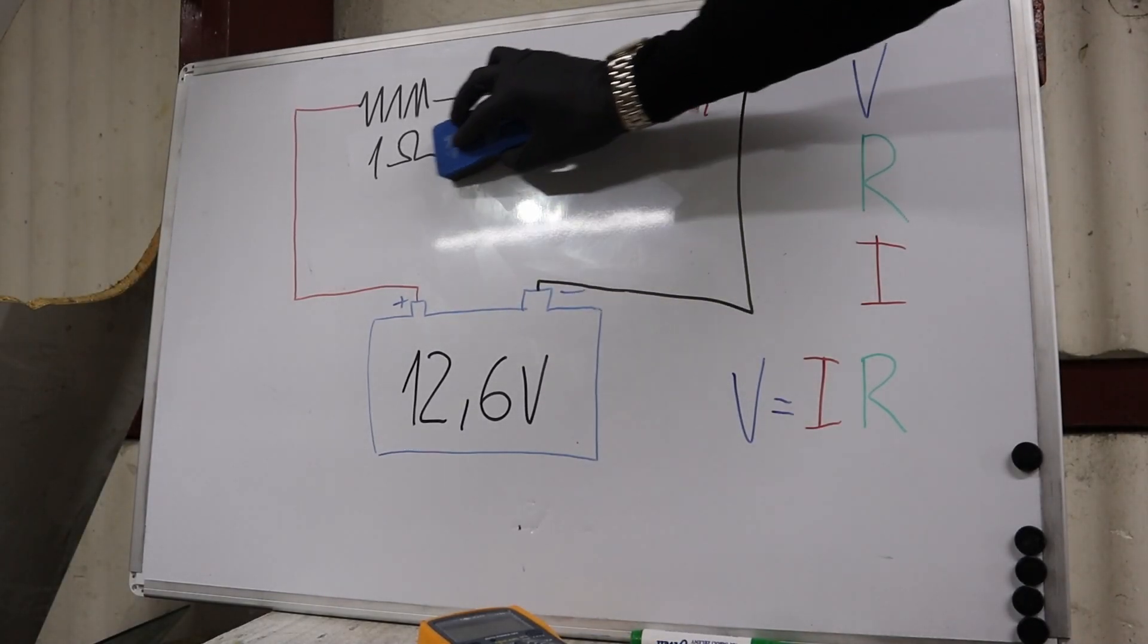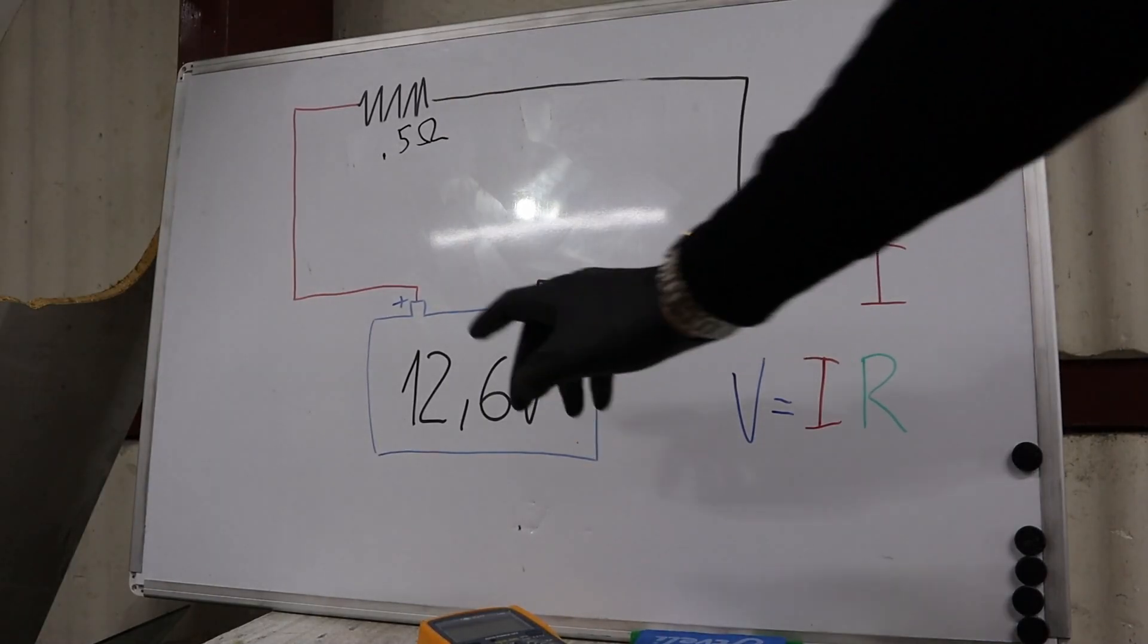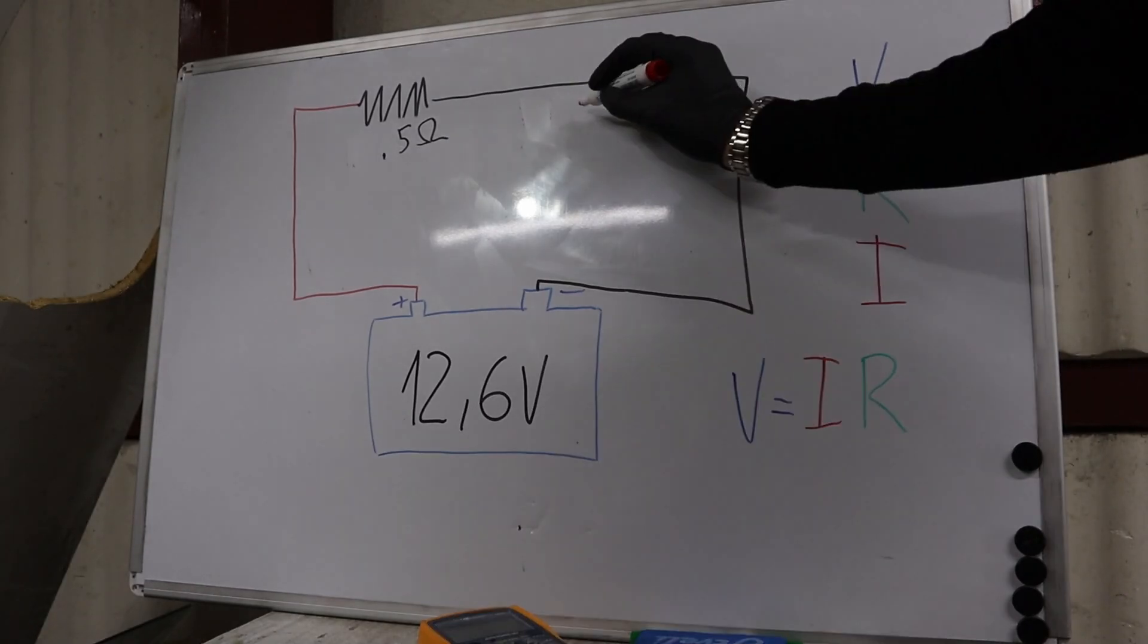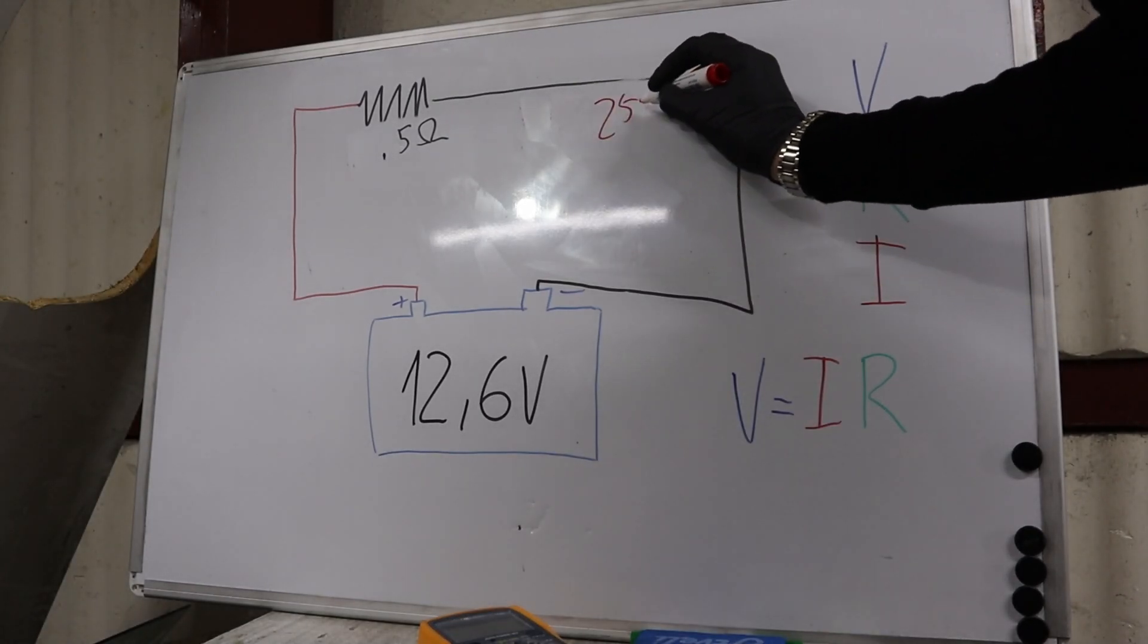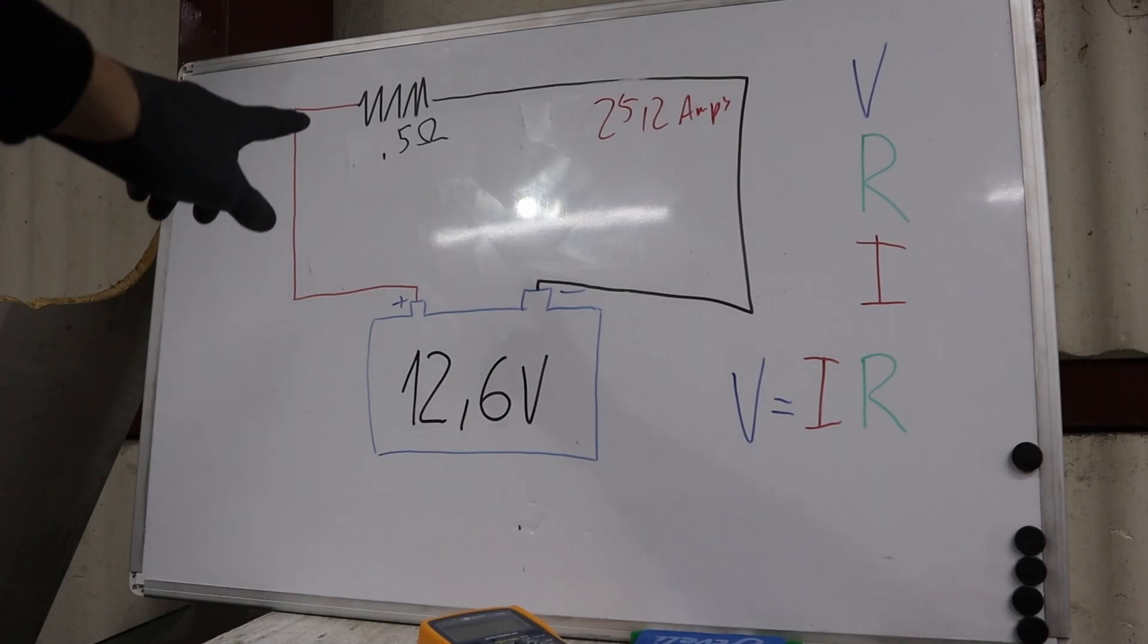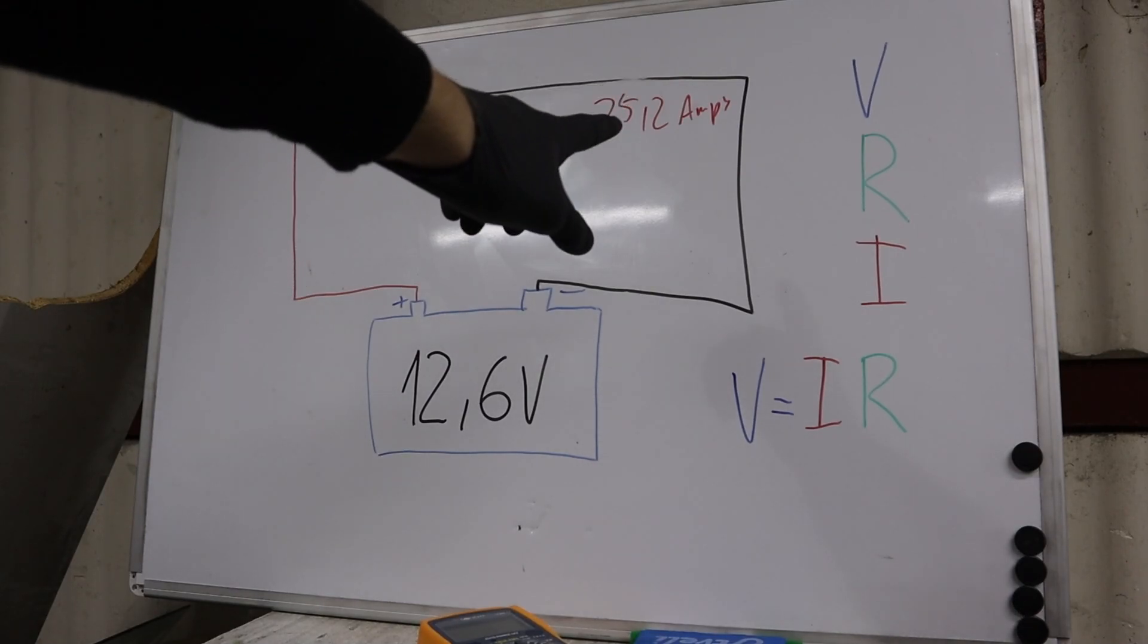If we have even lower resistance, say only 0.5 ohms, we would have 25.2 amps of current. Now it's getting dangerous because if you have a component with such low resistance, you will get more current.